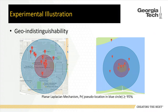The reason geo-indistinguishability has such difficulties is that it doesn't consider any prior information. Prior information for location data can be easily obtained from publicly available information like population density, check-in datasets, or maps. The adversary can use this prior information to possibly degrade the privacy protection provided by geo-indistinguishability. So it is desirable to have an adaptive noise level for geo-indistinguishability according to the prior distribution of the area.